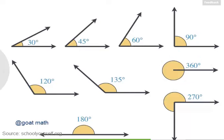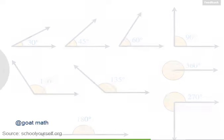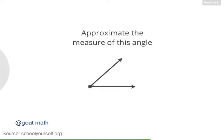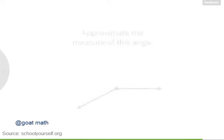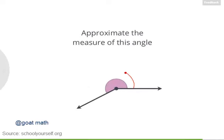Let's finish this lesson by estimating a few angles. Take a look at this one — how many degrees would you say are in this angle? If you're not sure, click the hint. This is a 45 degree angle. Now for your final challenge: how many degrees would you say are in this next angle?